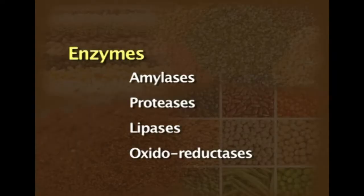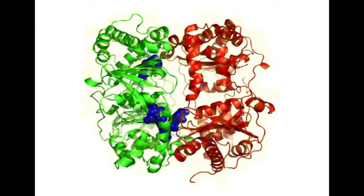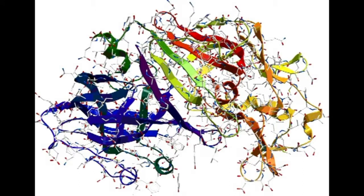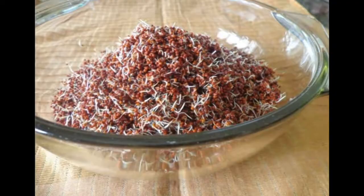All the cereal grains contain various quantities and types of enzymes. Important ones include amylases, proteases, lipases and oxidoreductases, which help in the digestion and absorption of these cereals. The alpha amylase activity in cereals increases when the grain is malted or germinated.